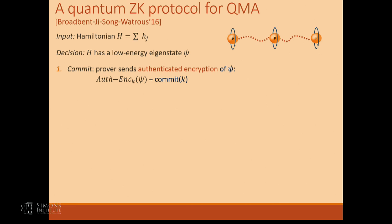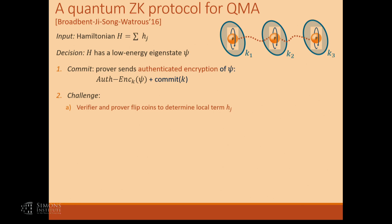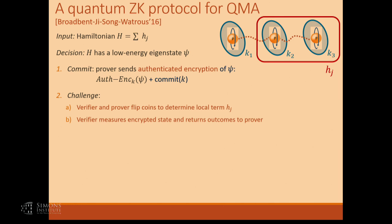This authentication is going to require a couple of properties that we'll see as we go through the protocol. Then we're also throwing in a coin-flipping protocol to ensure that the verifier chooses the term to open uniformly at random — that's a classical protocol between the verifier and the prover. The prover and the verifier jointly select the term to be opened.